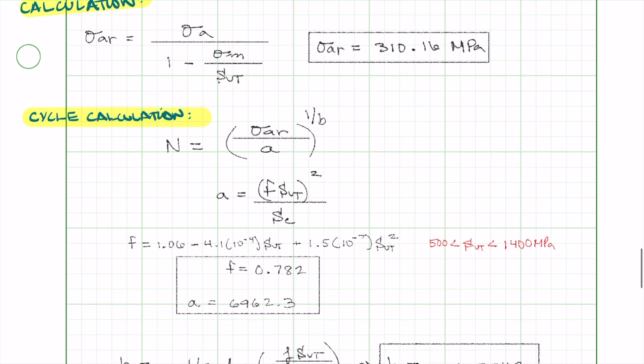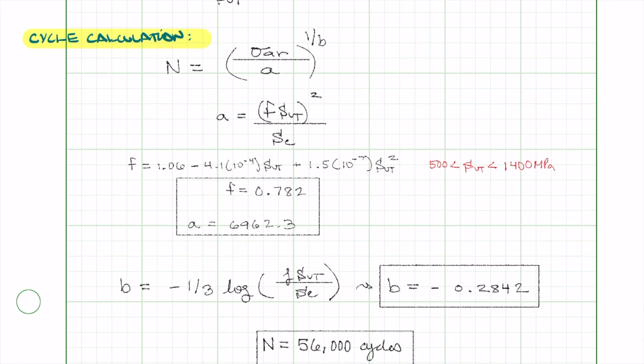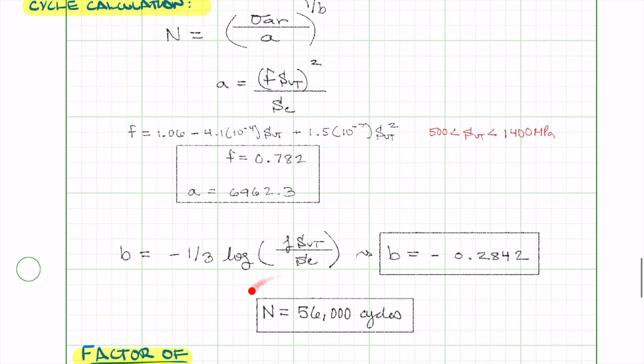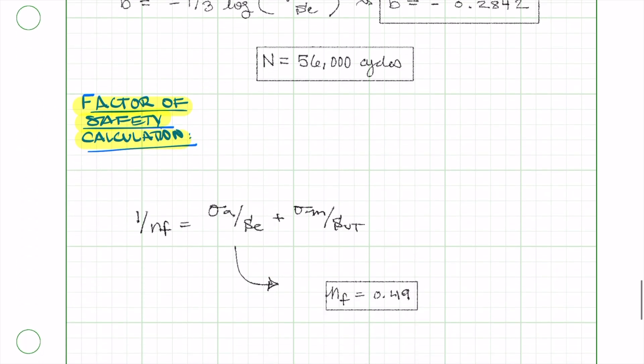After this, we can calculate constants A, B, and F, which allow us to find a number of cycles to failure as 56,000, and the factor of safety is 0.49.